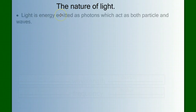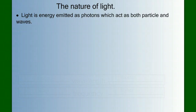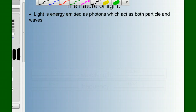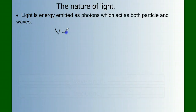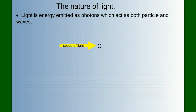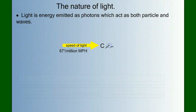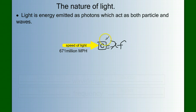We need to talk about the nature of light. Light is energy emitted as photons, which can act as both particle and wave. And since light is driving photosynthesis, we need to investigate its nature. We know that the velocity of a wave equals the wavelength — lambda — times the frequency. The speed of light is approximately 671 million miles per hour, and it equals wavelength times frequency. The speed of light is a constant — it doesn't matter what color of light. In fact, all electromagnetic energy travels at the speed of light. So if this number is constant, wavelength and frequency must be inversely related.